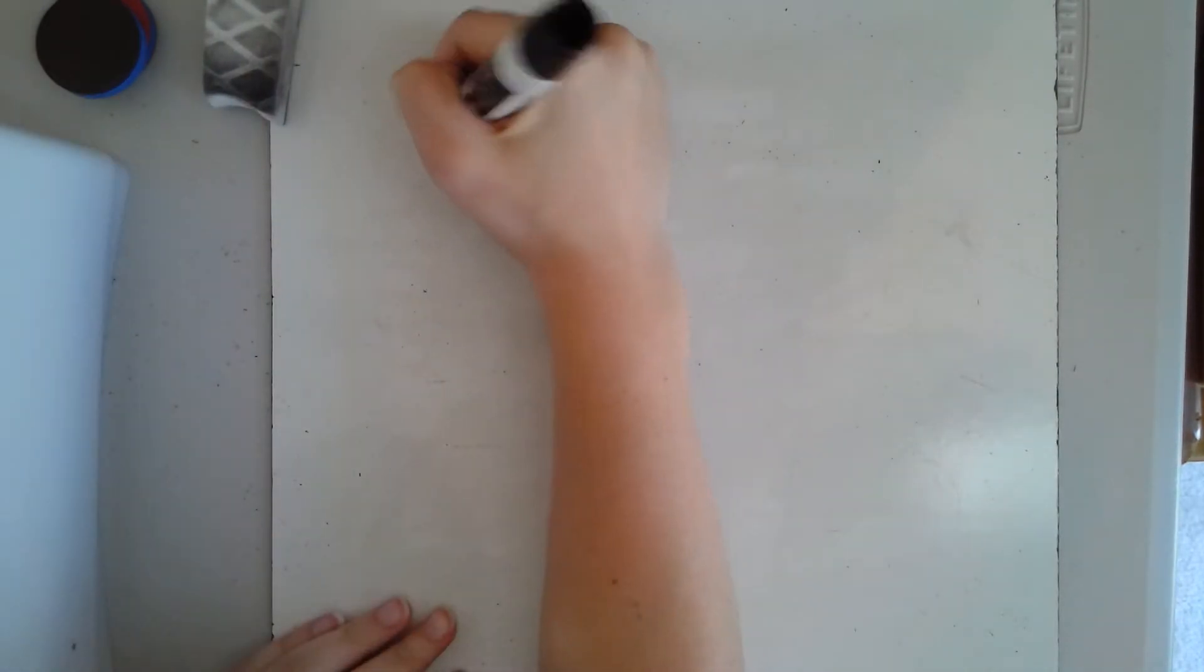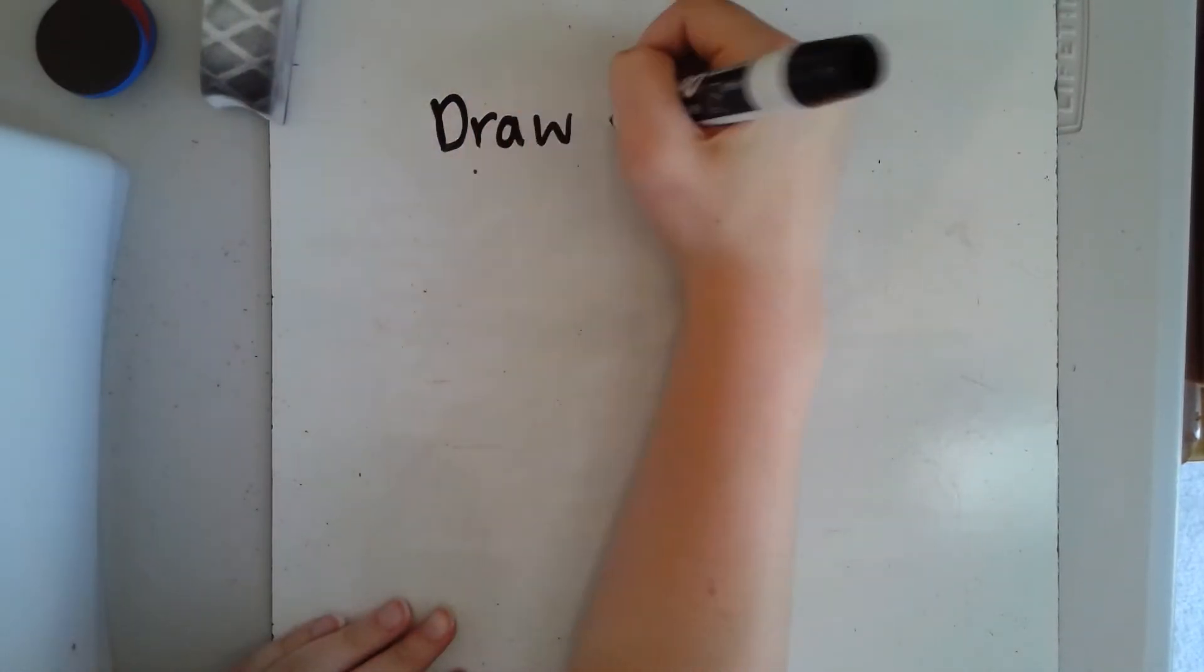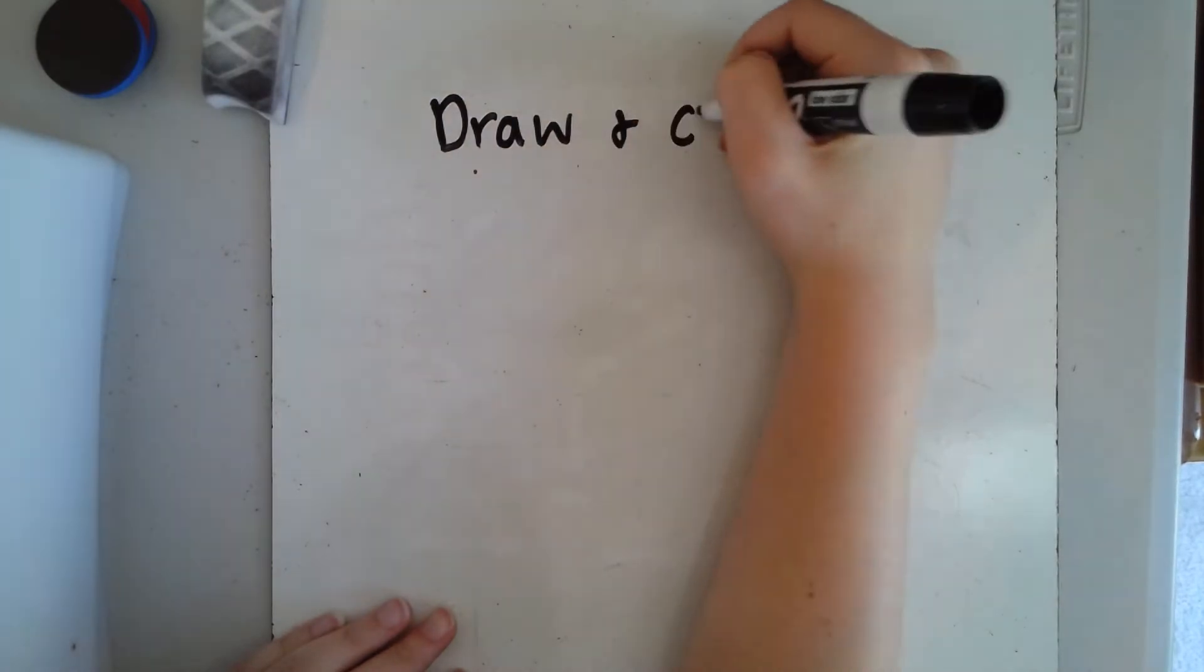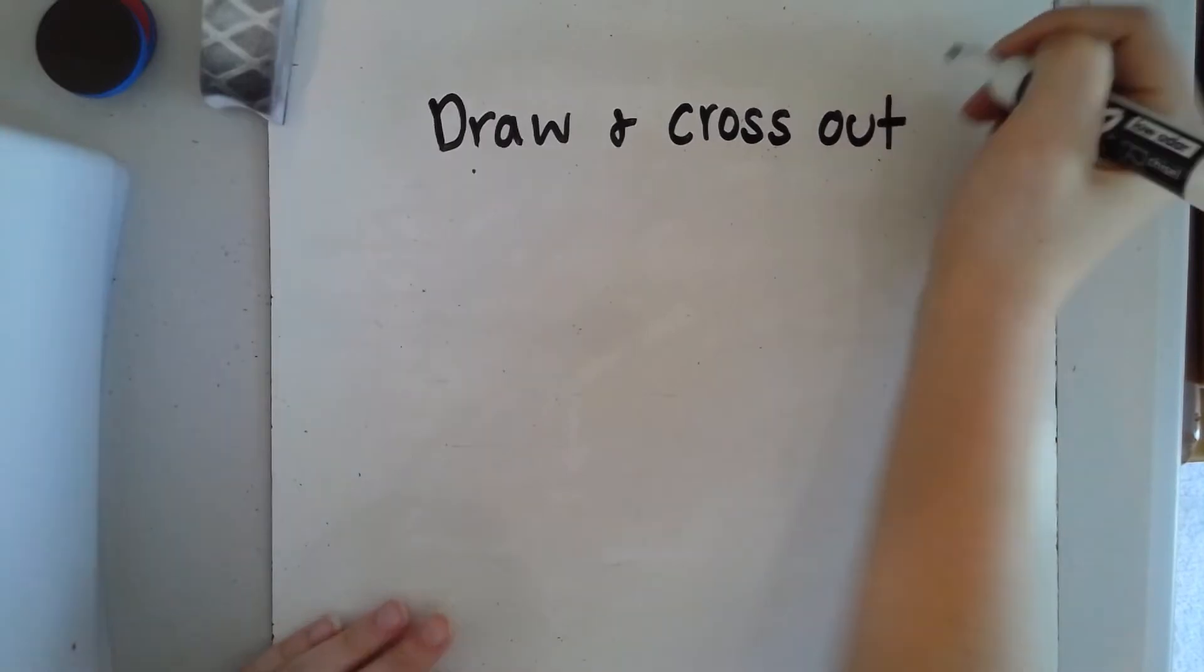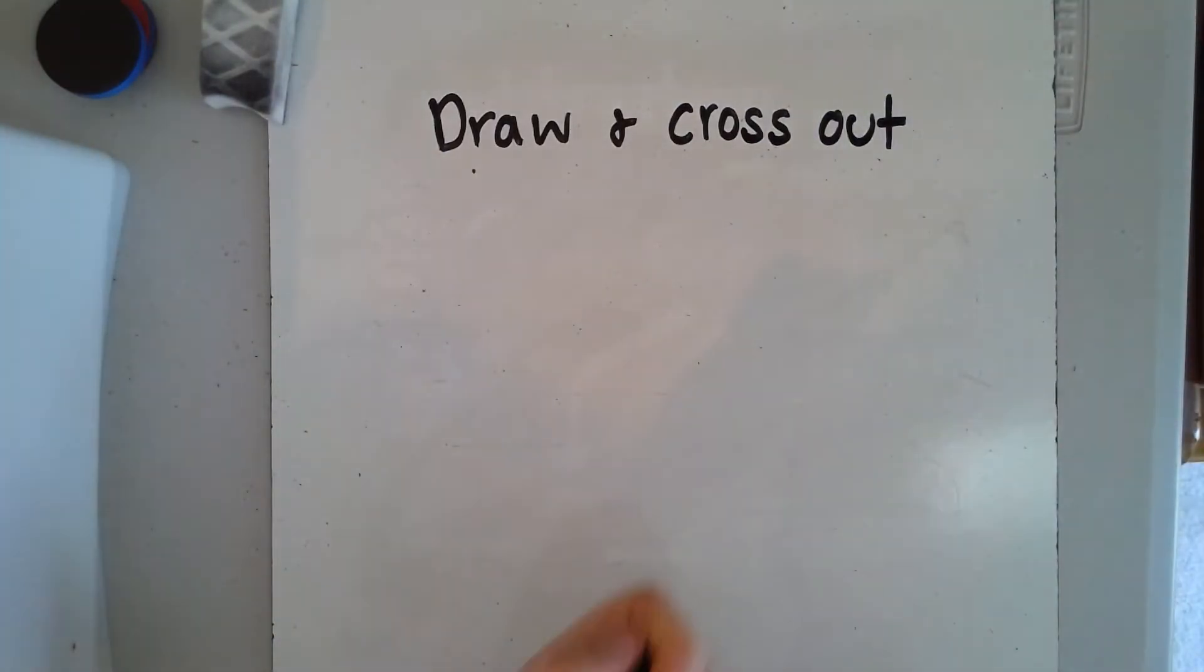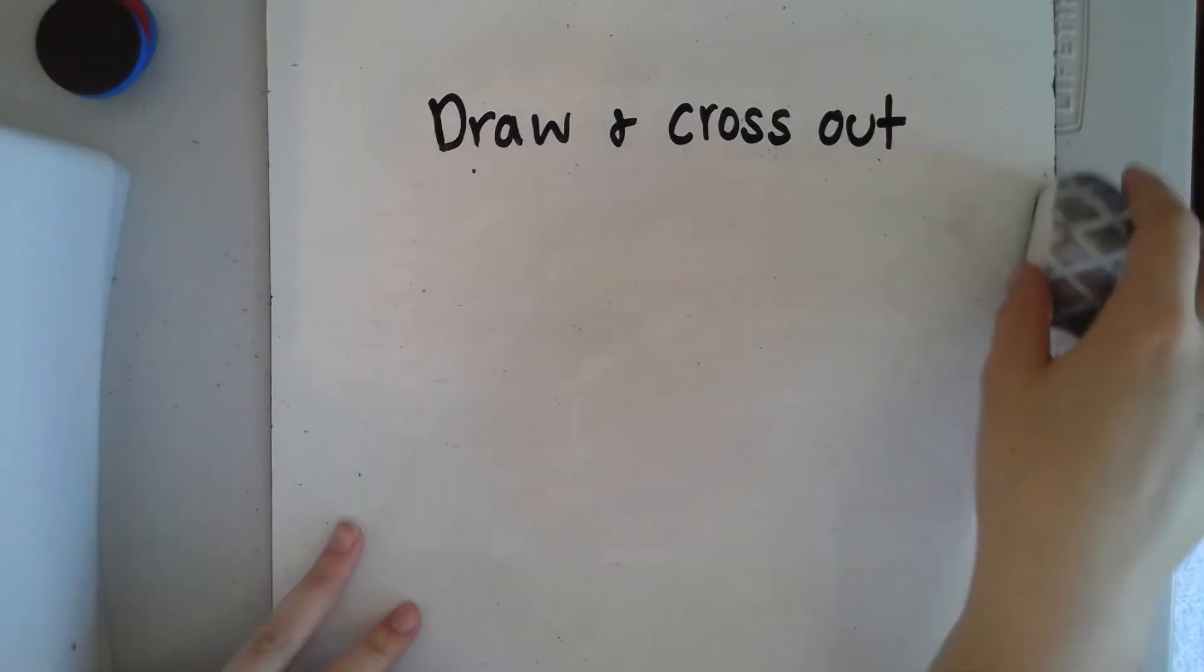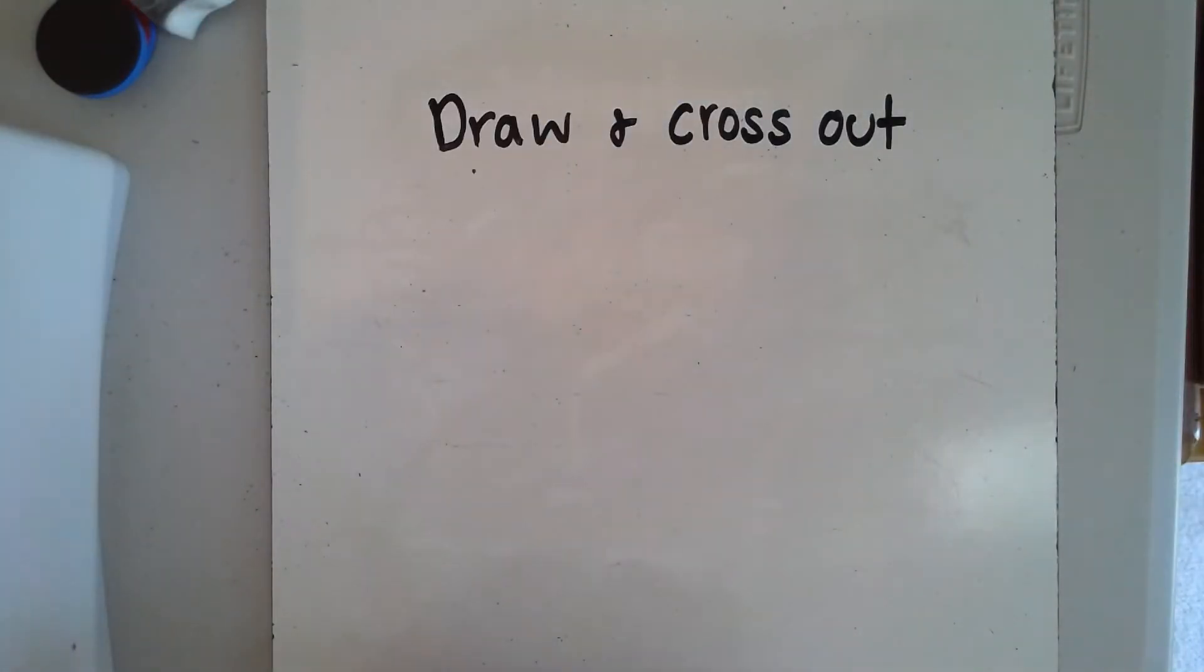This strategy is called draw and cross out. We've used a drawing strategy before with addition, but we did not cross it out because we are not taking things away. Let me show you an example.